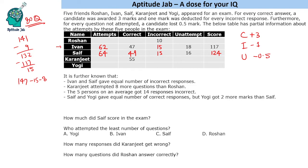Karanjeet attempted 8 more questions than Roshan, but we have not yet found Roshan, so let us read the next statement. The 5 persons on average got 14 responses incorrect, so the total incorrect responses will be 70.